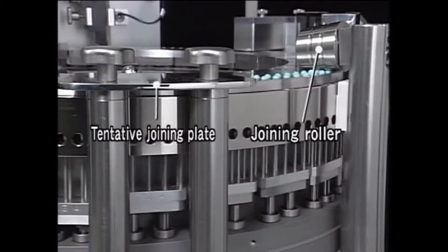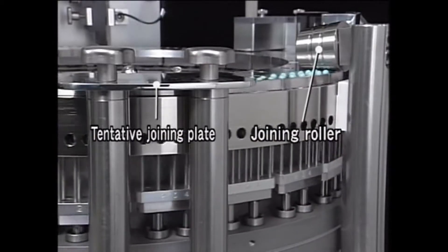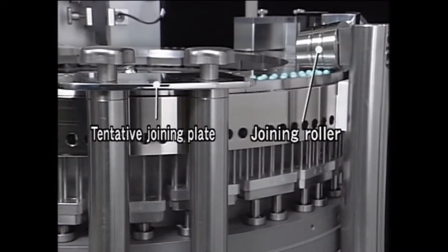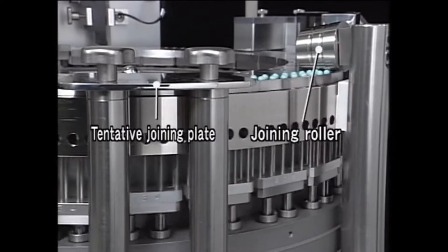After pushing up the filled body of the capsule with a plunger, the air is released from the capsule by joining the halves tentatively. This means there will be no excess pressure when introducing the mechanism for actual joining.